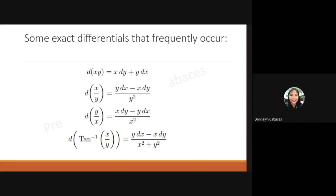The derivative of the quotient x over y is equal to y dx minus x dy, all over y squared. The derivative of the quotient y over x is equal to x dy minus y dx, all over x squared. And the derivative of arctangent of y over x is equal to x dy minus y dx, all over x squared plus y squared.